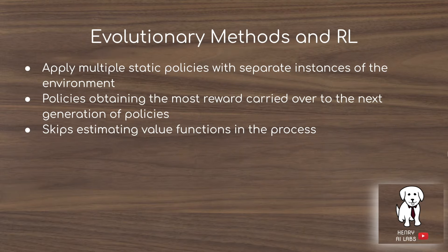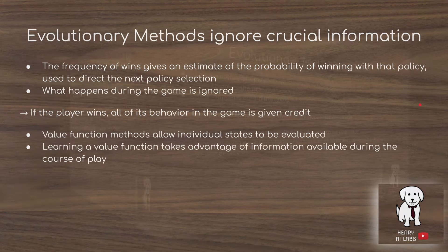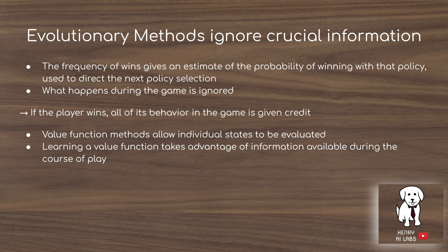One interesting comparison in the book is between evolutionary methods and reinforcement learning. One way to apply evolutionary methods is to run many static, deterministic policies across separate instances of the environment; the policies that obtain the most reward are carried over to the next generation and mutated. Using this approach, you don't need to evaluate the intermediate values of states at all. One reason to prefer RL algorithms that use value function estimation is that evolutionary methods ignore crucial information — they only prefer policies with the largest probability of winning, totally ignoring what happens during the game, whereas value functions take advantage of this information for a more direct search.